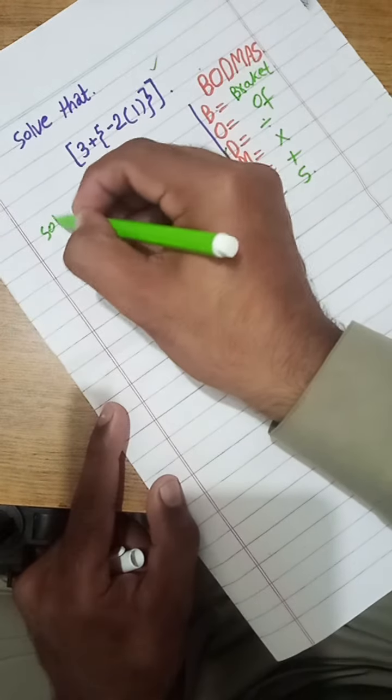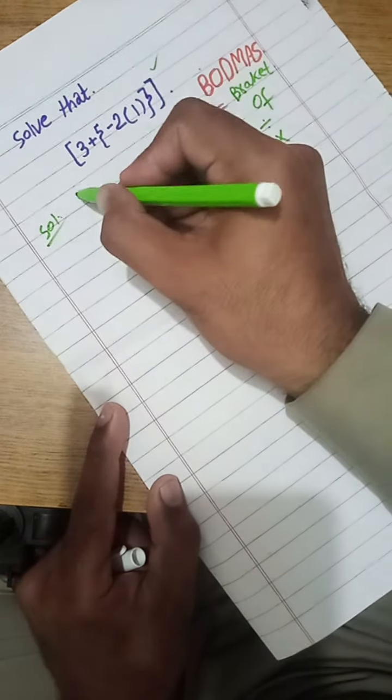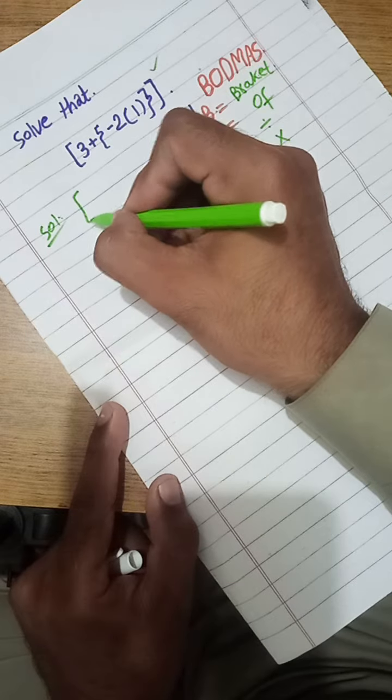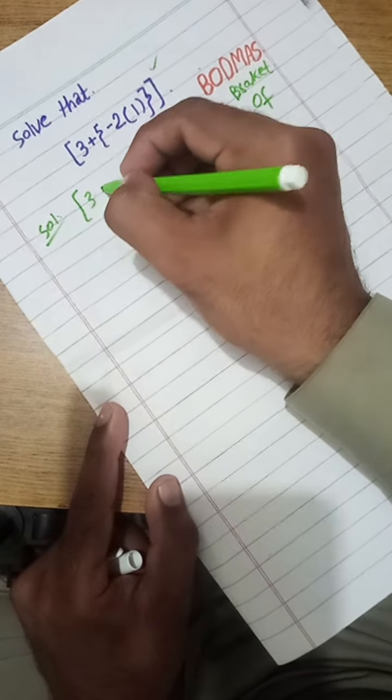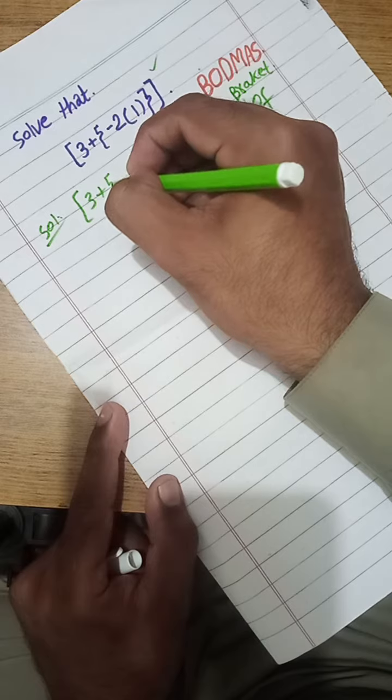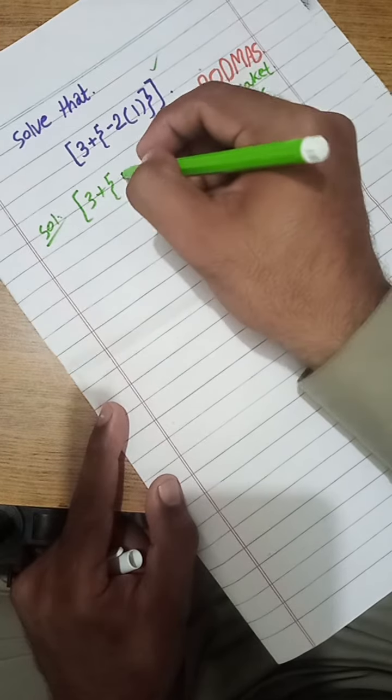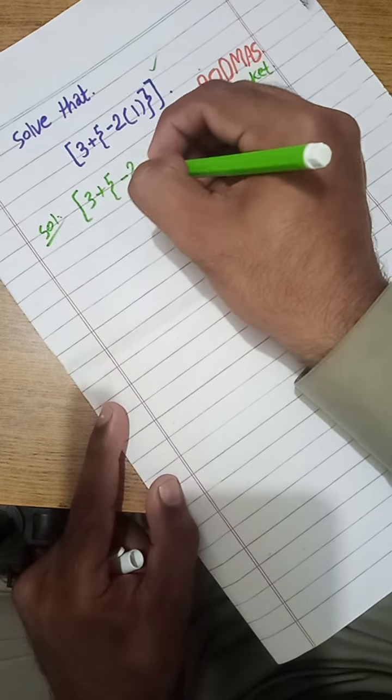We have to solve this problem. First we solve the curve bracket, which gives minus 2 times 1.